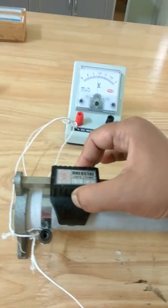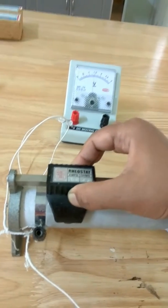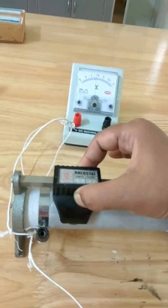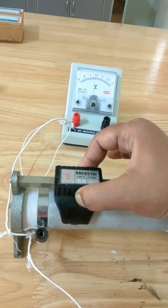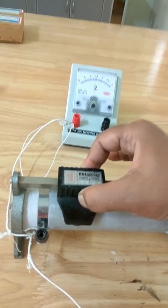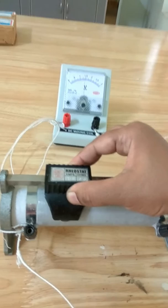When you move the jockey from left to right, you are increasing resistance. And along with that, there is an increase in the voltage in the voltmeter.